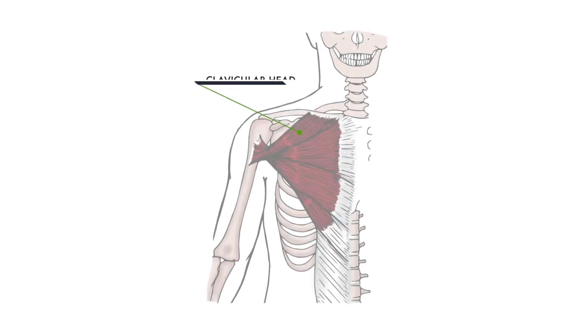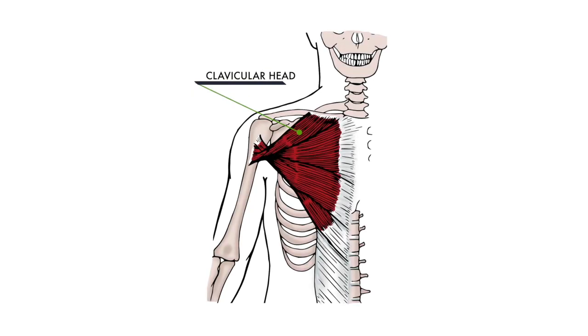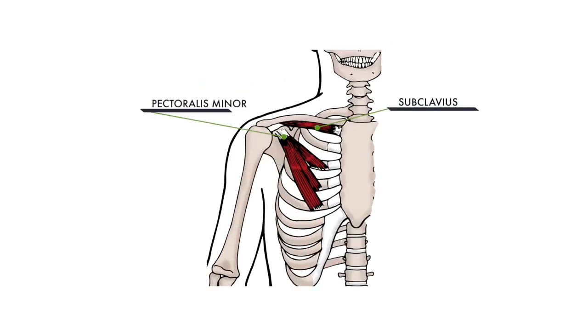The pec major originates from the clavicle through the sternum and then inserts outside on the humerus. The pec minor inserts from the 3rd, 4th, and 5th rib up to the acromion process.